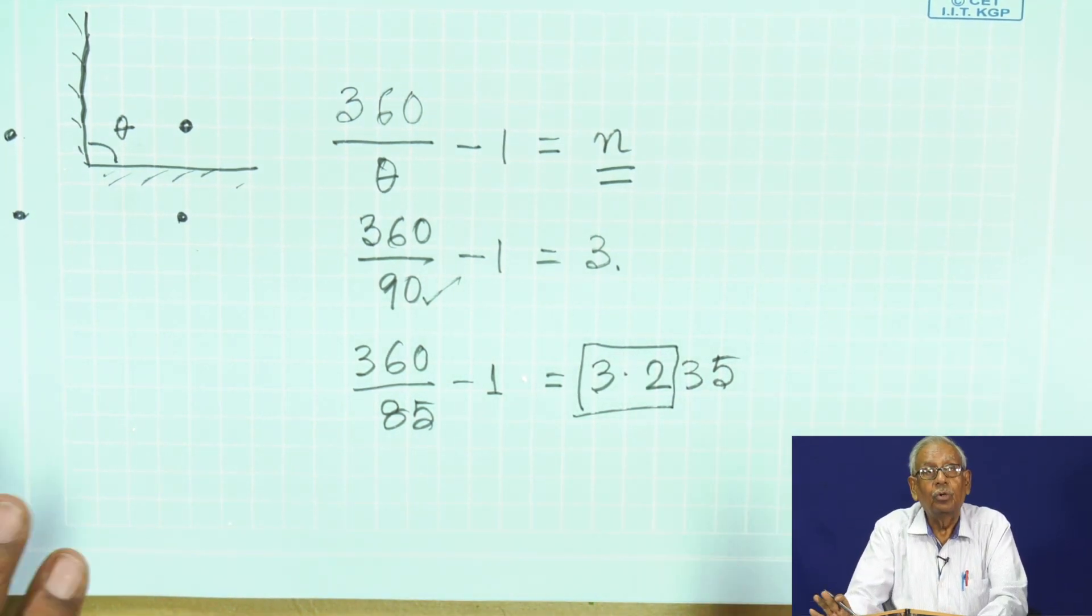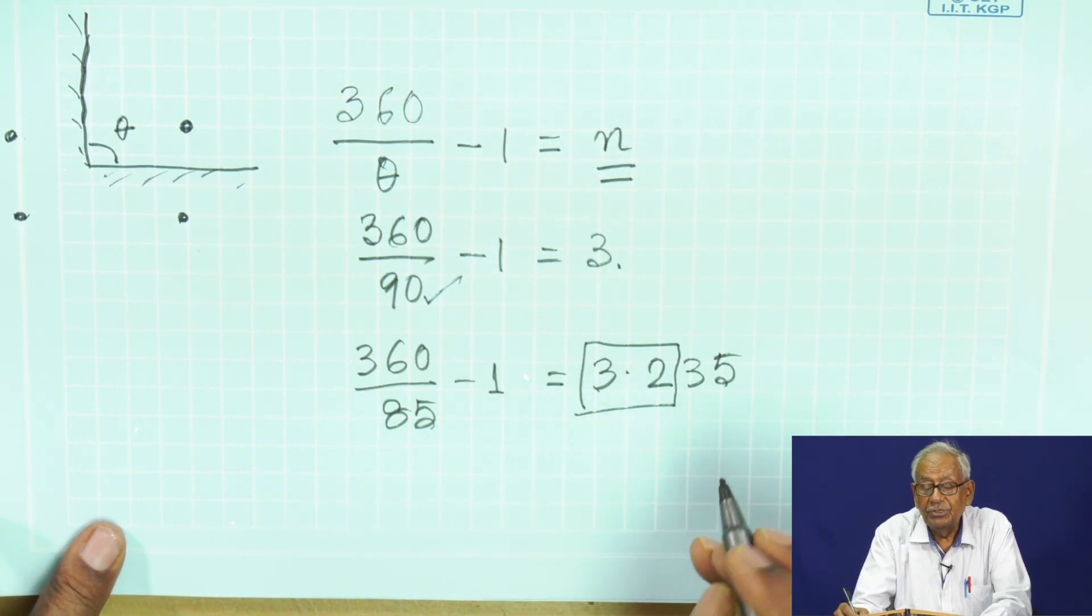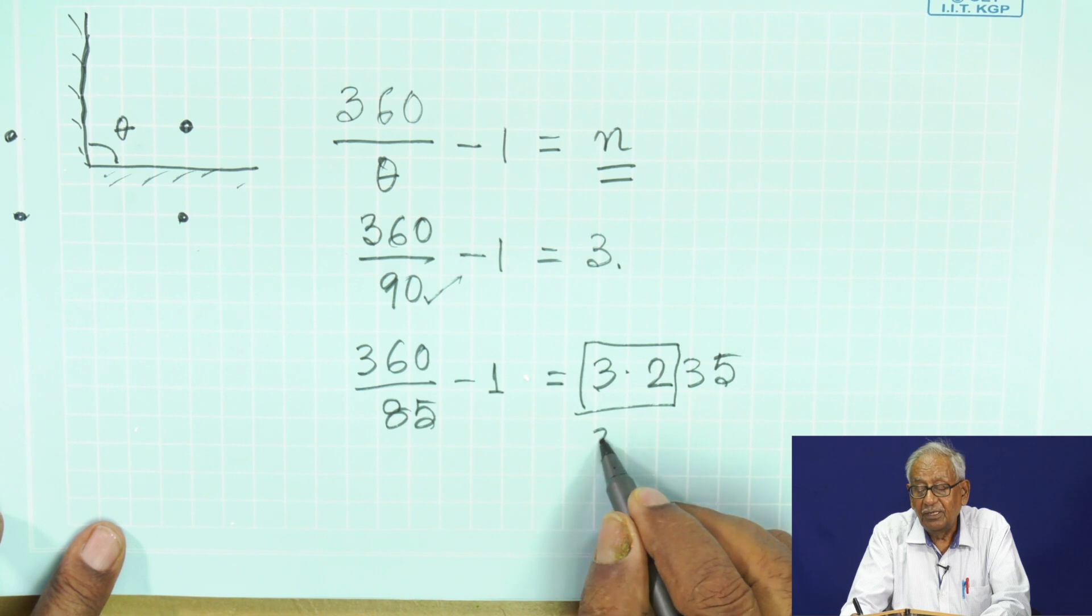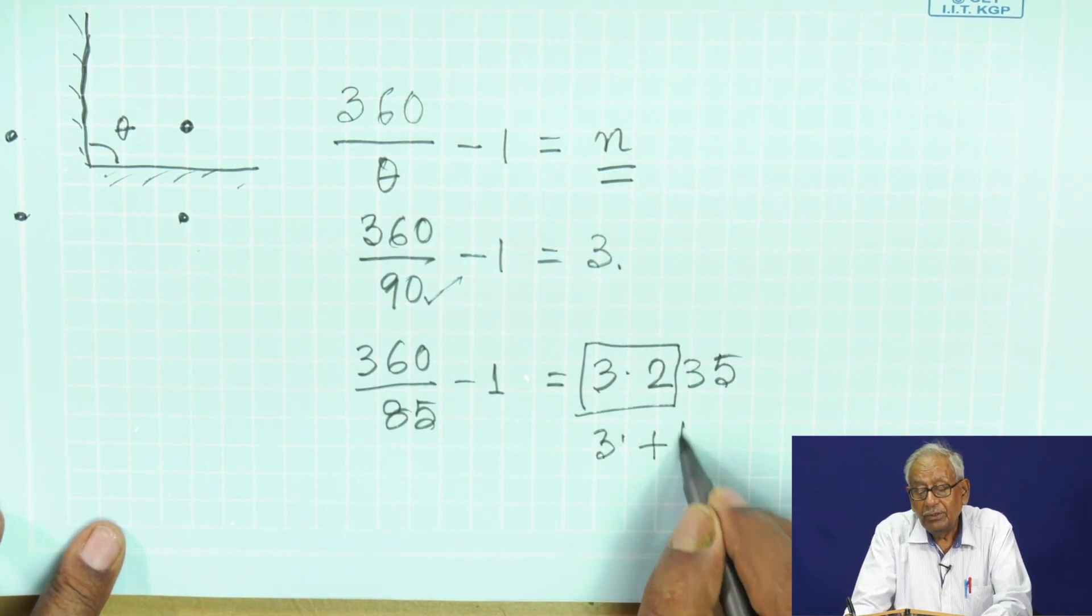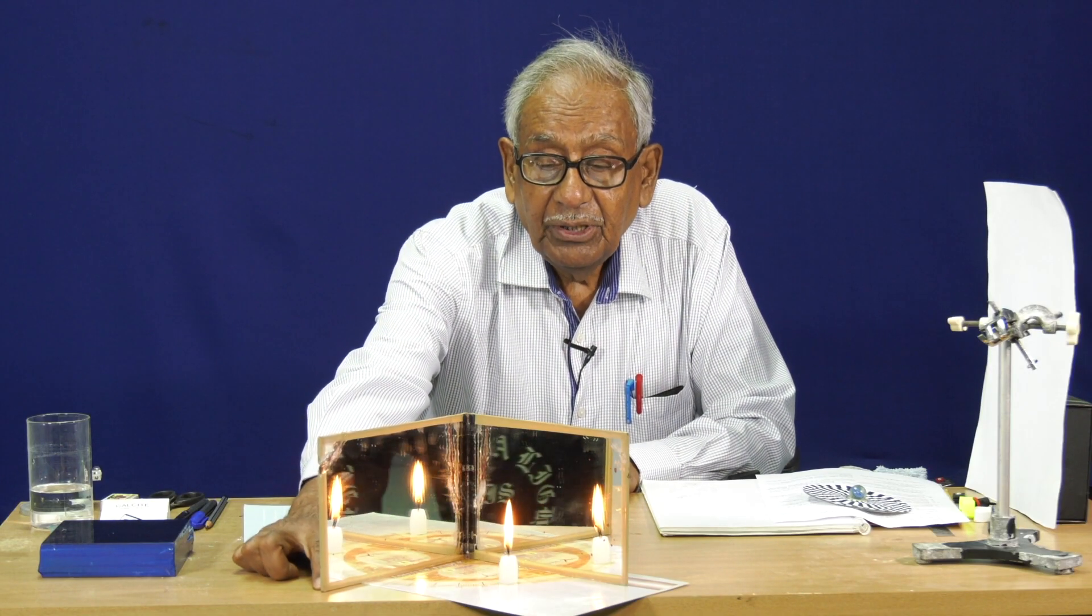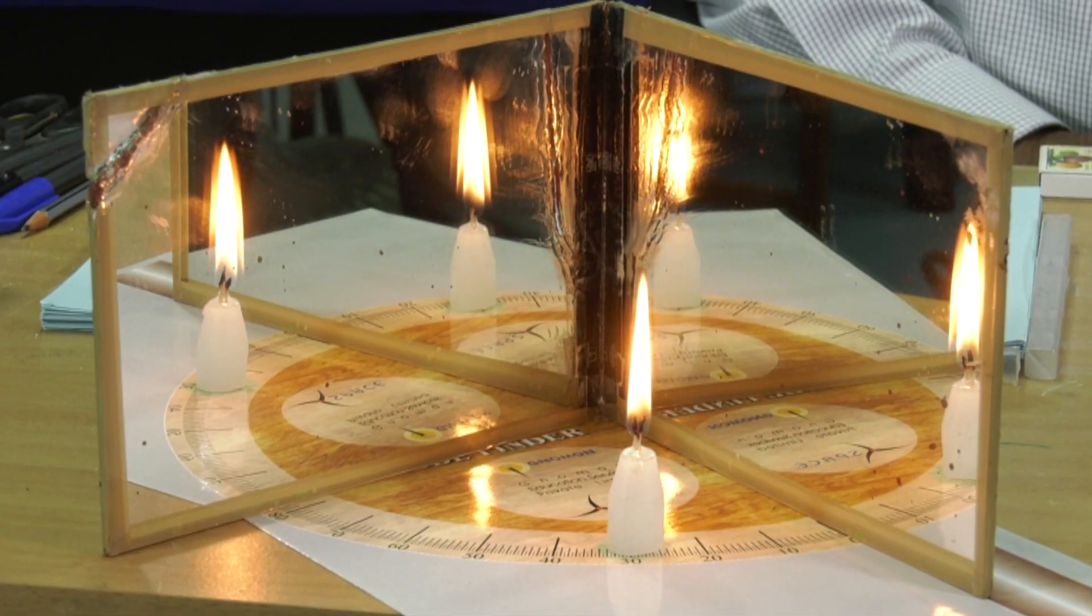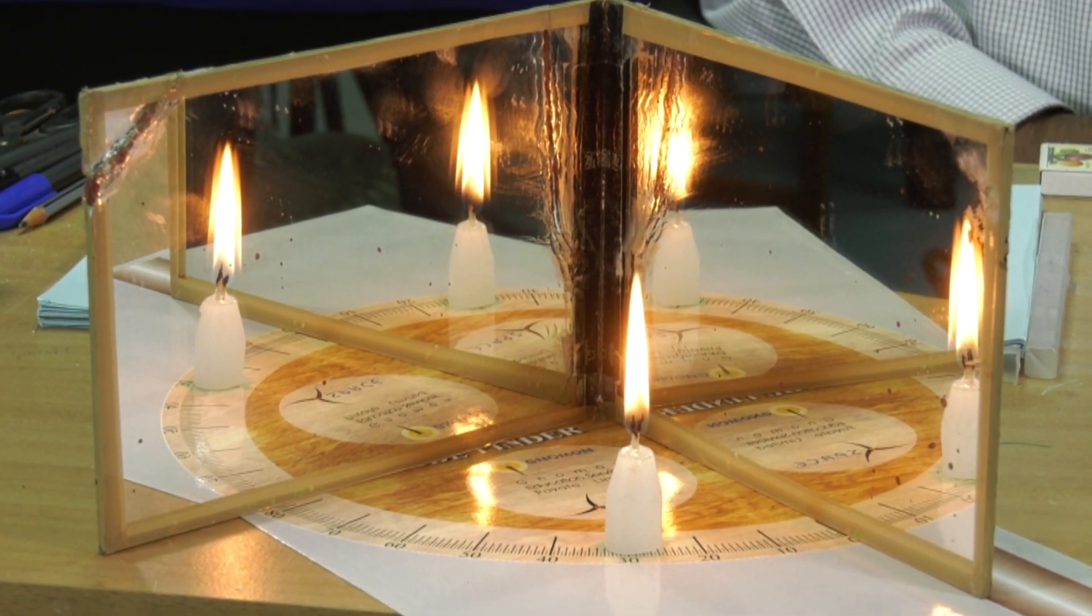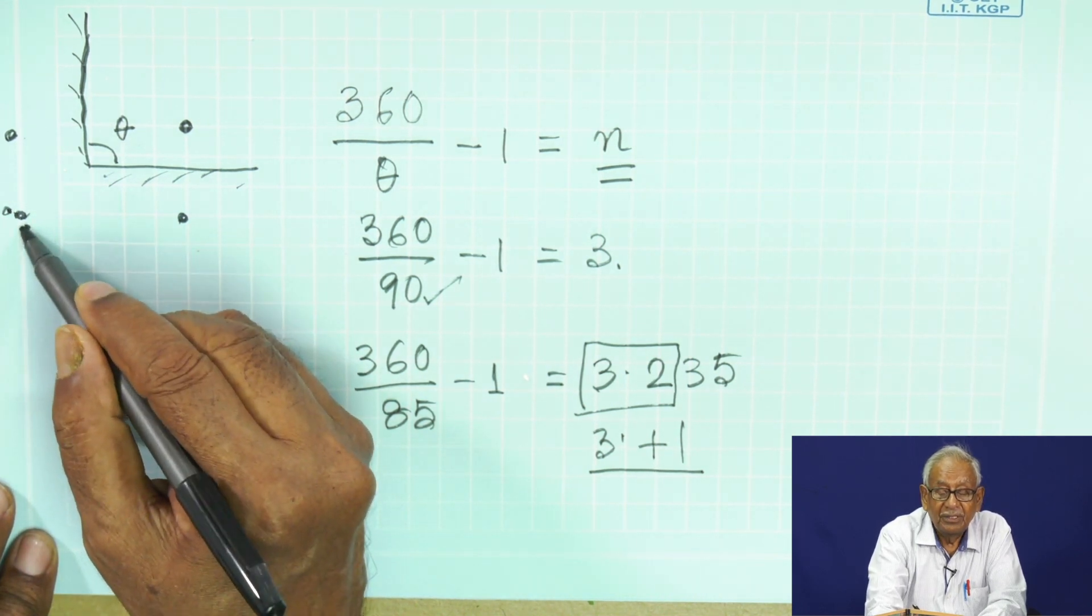Then what will we see? Actually, in your book it is written that whenever there is a fraction, you should add one with the integer. Now I am just moving it a little bit so that it is approximately towards 85 degrees, and now you see these images—they are getting separated.